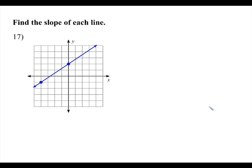The last problem: find the slope of the line using the graph. You can find the coordinates and use the slope formula, but it's easier to use rise over run. Going from left to right, from one point to the other, I would go up 1, 2, 3 — so the rise is positive 3 because you're moving up. And moving to the right: 1, 2, 3, 4 — so 4 to the right. The number you move up or down goes on top, so 3 goes on top, and 4 goes in the denominator. Your slope is 3 over 4.